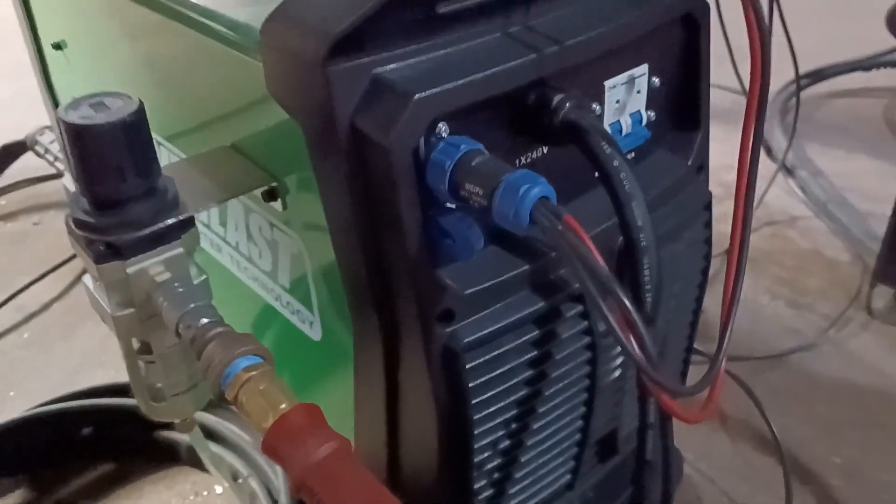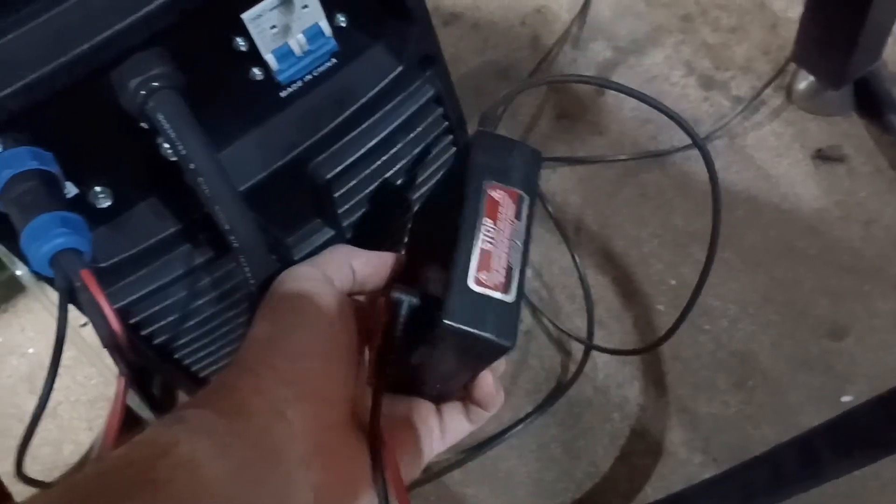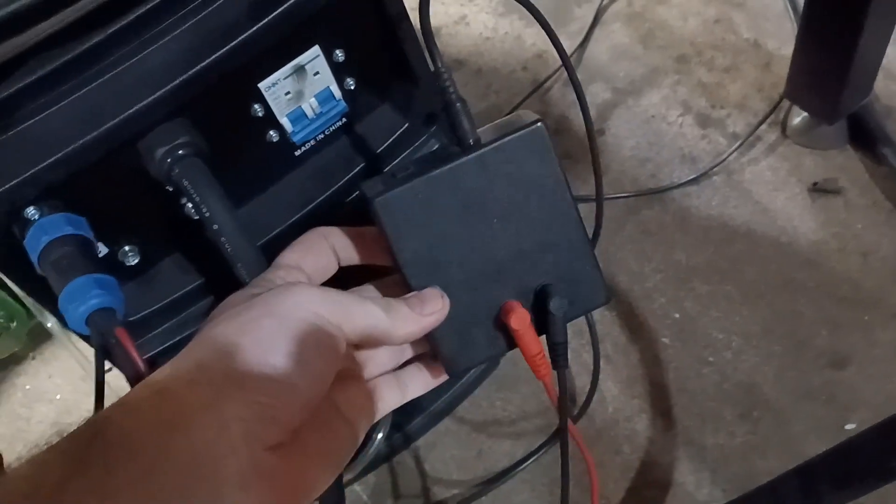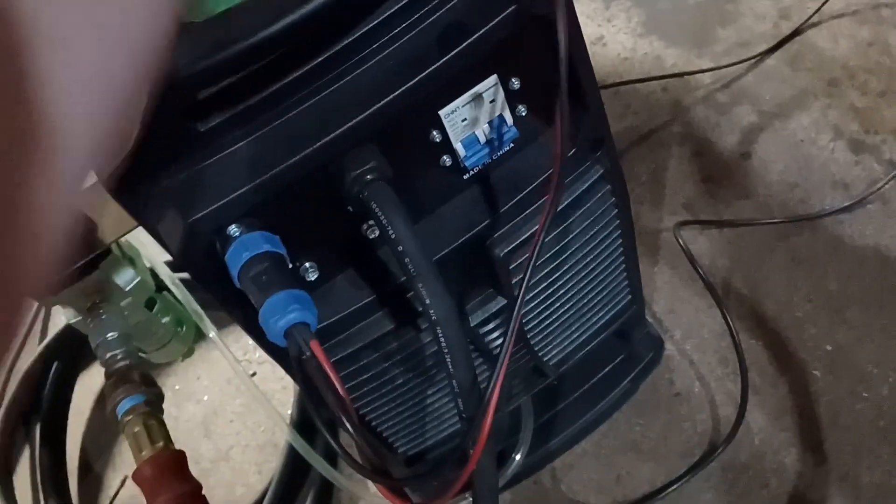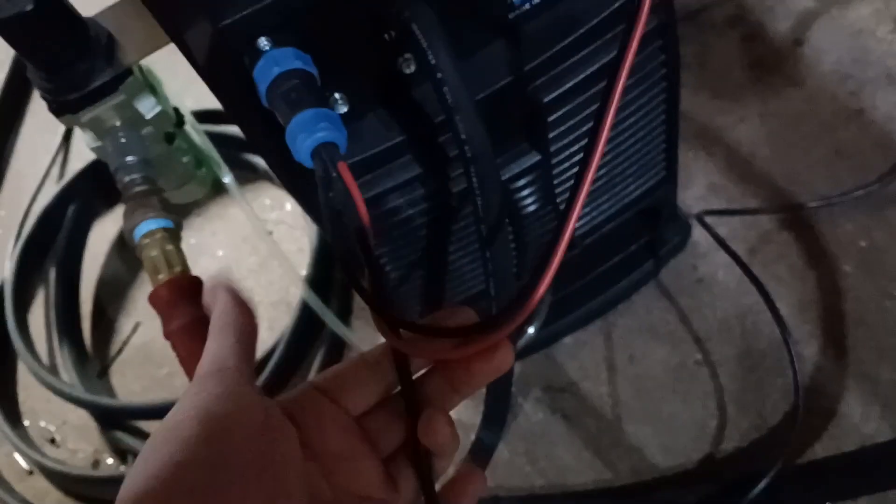So, the Power Plasma 82i comes with a connector right there. And basically, I'm running the raw voltage. I find it has the best performance. So I've got those hooked into here, and then I've got the trigger going over, just like you would your razor weld.